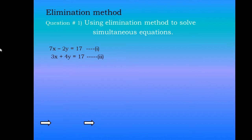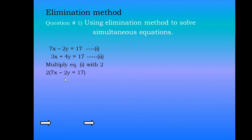If we want to eliminate the variable y first, then we'll only need to multiply equation 1 with 2. So I am going to multiply equation 1 with 2. In this way I'll have 14x minus 4y equals 34, because this 2 will multiply all the values in the whole equation.